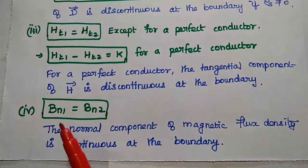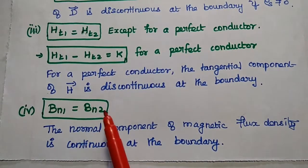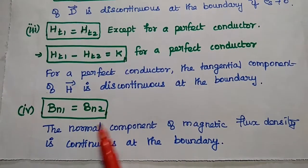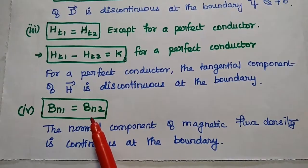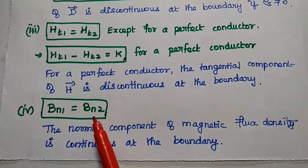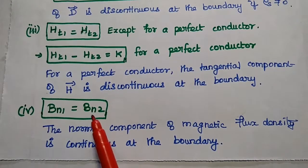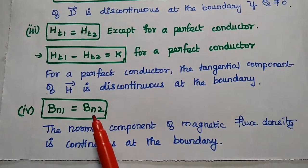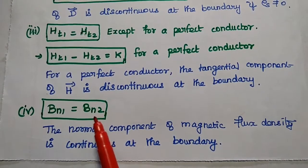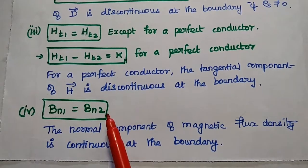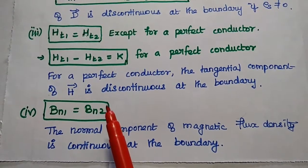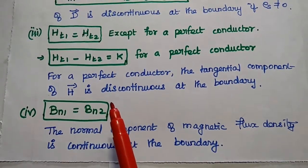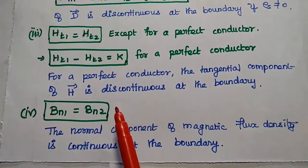The next condition concerns magnetic flux density, considering the normal component. The normal component of the magnetic flux density is always continuous at the boundary for the magnetic field.